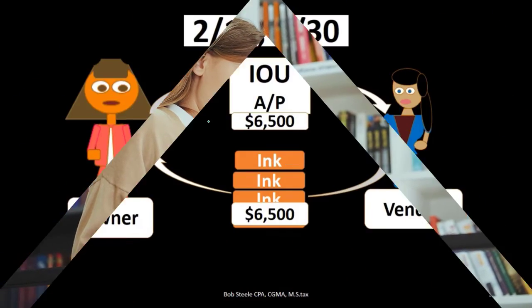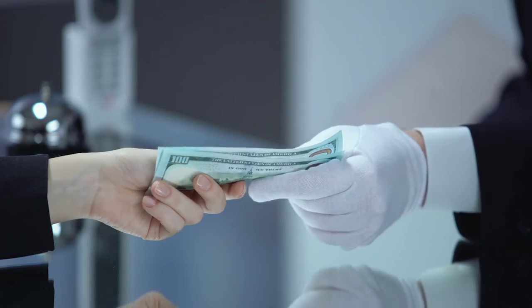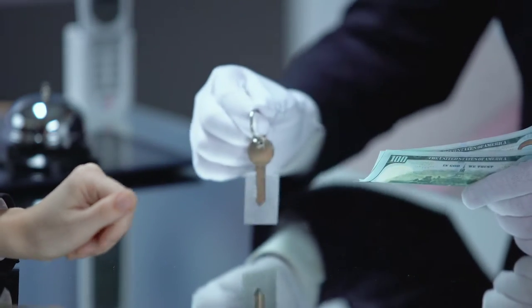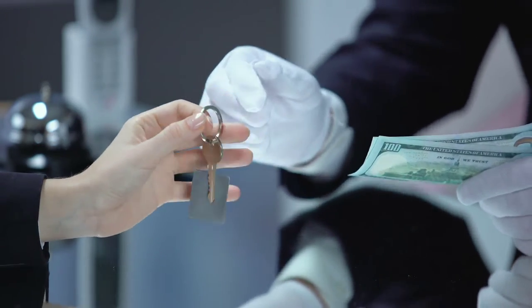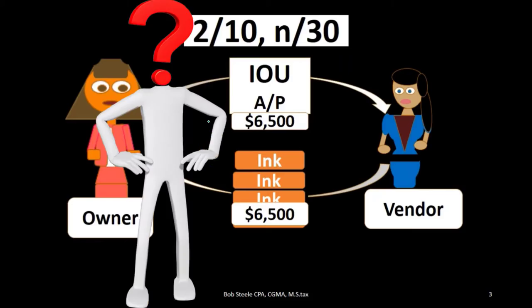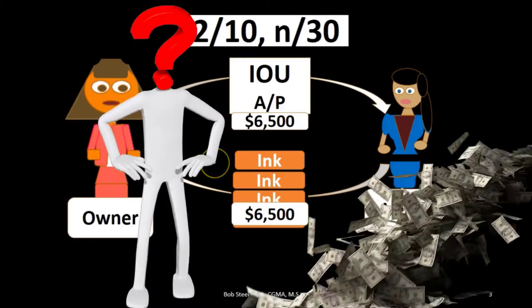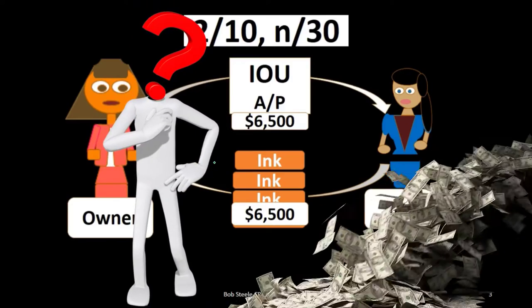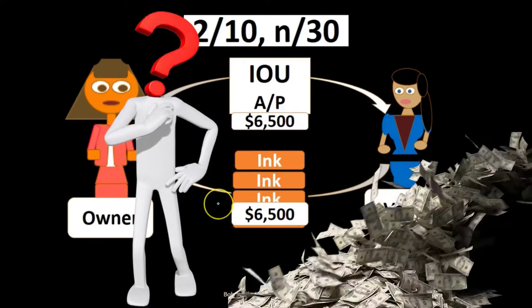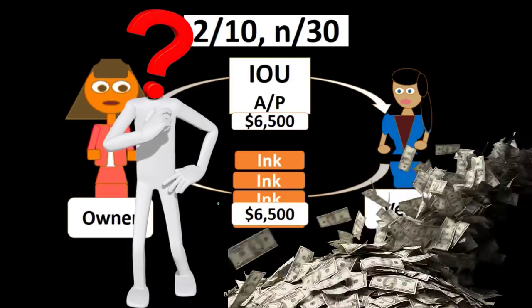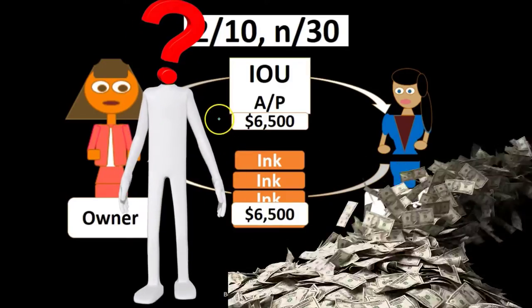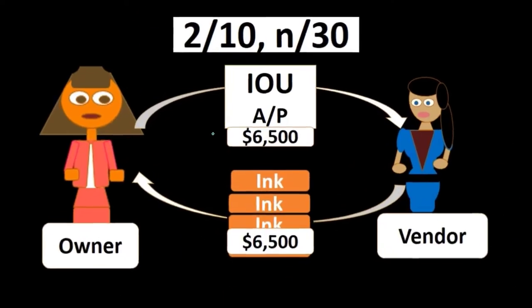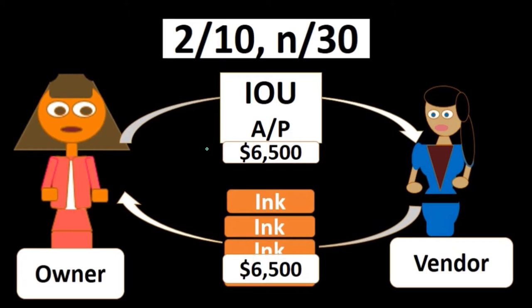If we happen to pay within that 10-day period, we will account for the discount at the time of payment. Therefore, when we put this inventory on the books, we debit inventory $6,500 and credit accounts payable — the IOU — for $6,500.